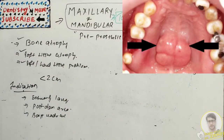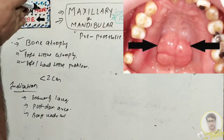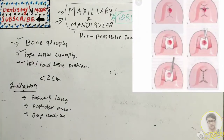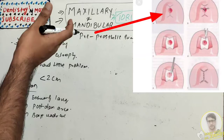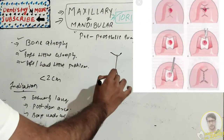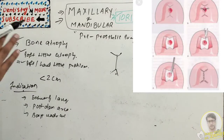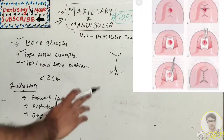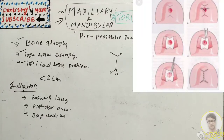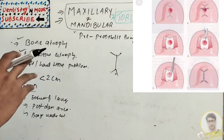For the maxillary tori removal procedure, a midline incision is given in the palate — as you can see in the picture — and the flap is reflected with a Y-shaped releasing incision. The torus is then removed by making multiple cuts. The flap is sutured, and a palatal splint is given to prevent hematoma formation.